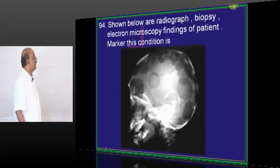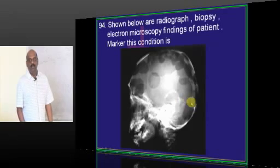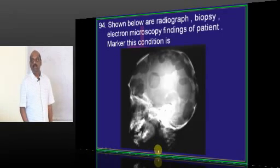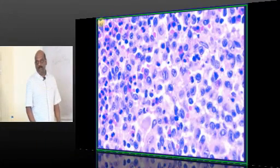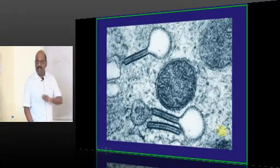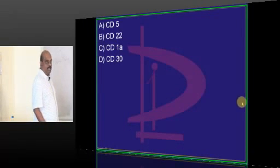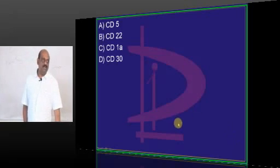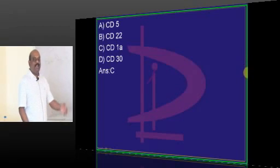Shown below is the radiograph, biopsy, and electron microscopy. What is the marker for this condition? What is shown is a radiograph with lytic lesions in the skull and a biopsy showing abundance of histiocytes and Birbeck granules, which are racket-shaped. Birbeck granules are characteristic on electron microscopy. That all says that it is histiocytosis X.